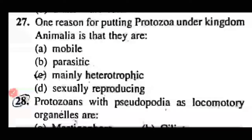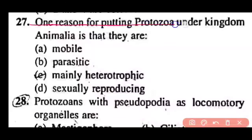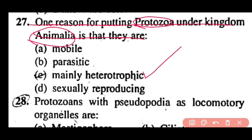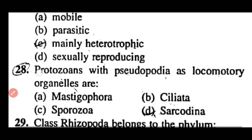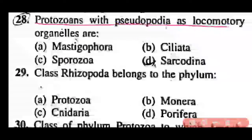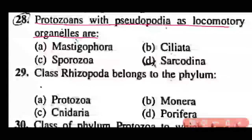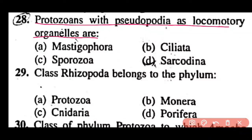Question 27: One reason for putting protozoa under kingdom Animalia is that they are mobile, parasitic, mainly heterotrophic, or sexually reproducing? Correct answer is option C. Protozoa is placed under kingdom Animalia because they are heterotrophic like animals. Question 28: A protozoan with pseudopodia as locomotory organelle belongs to Mastigophora, Ciliata, Sporozoa, or Sarcodina? Correct answer is option D. Class Sarcodina has pseudopodia as the locomotory organelle.